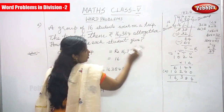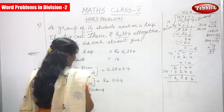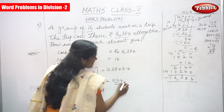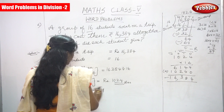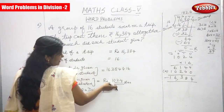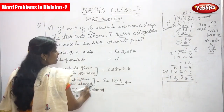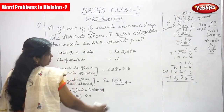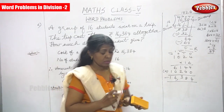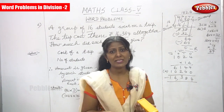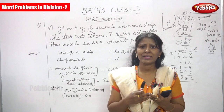The check method answer is also correct. So the answer — the amount given by each student — is Rs. 1,024. It's perfectly correct. Each student paid Rs. 1,024. Students, please watch the videos once or twice whenever you get free time, and concentrate on multiplication as well as division and practice more and more. Then only you can get perfection. Thank you.